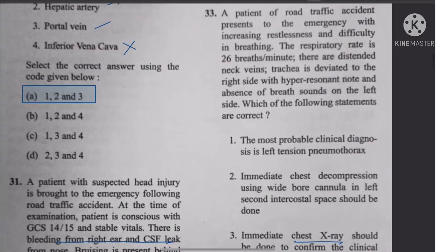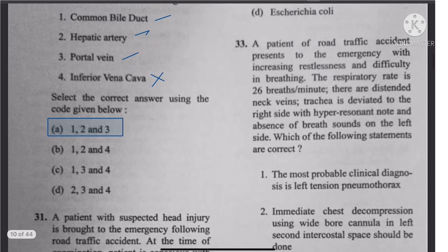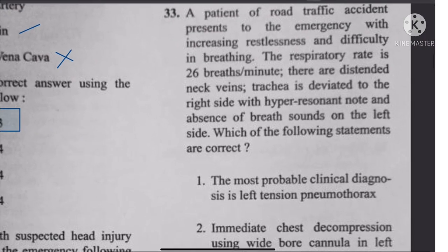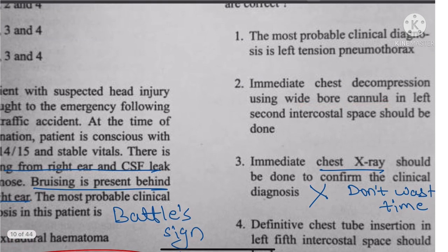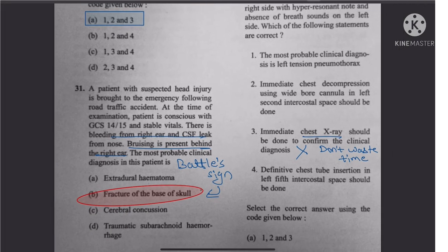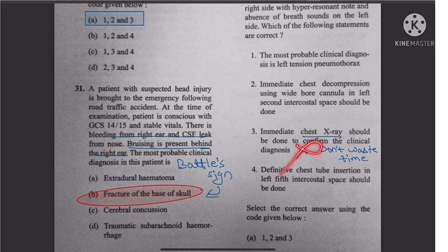Question 33: Another controversial question — recent guidelines suggest chest tube in the fifth intercostal space, not the second. But based on the given options, statements 1, 2, and 4 are correct. The statement that an immediate chest X-ray should be done to confirm clinical diagnosis before inserting the needle is wrong because it wastes time. The best answer per the options is 1, 2, and 4.